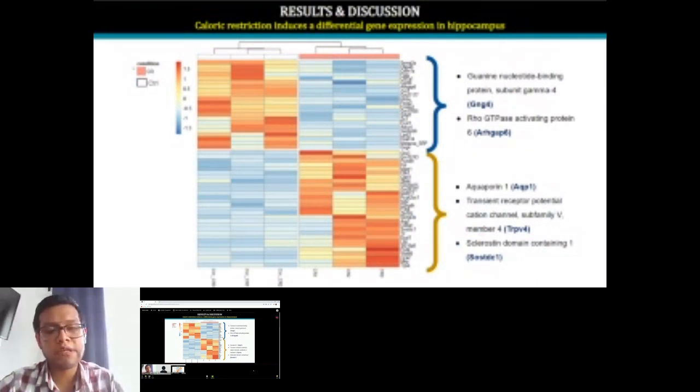We observe a clear difference in gene expression in mice exposed to calorie restriction versus a normal diet. There are genes that under calorie restriction turn off, while these same genes under control diet condition are turned on.